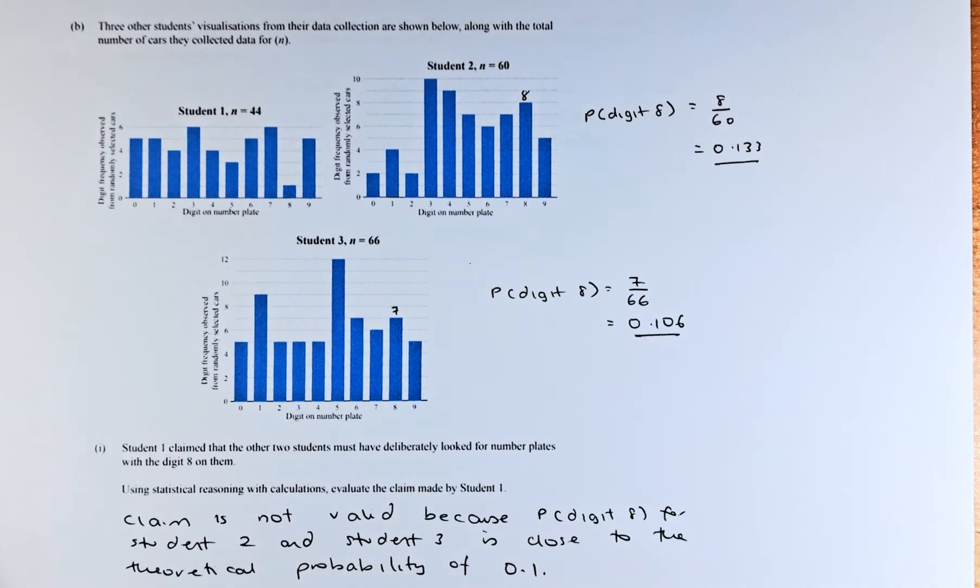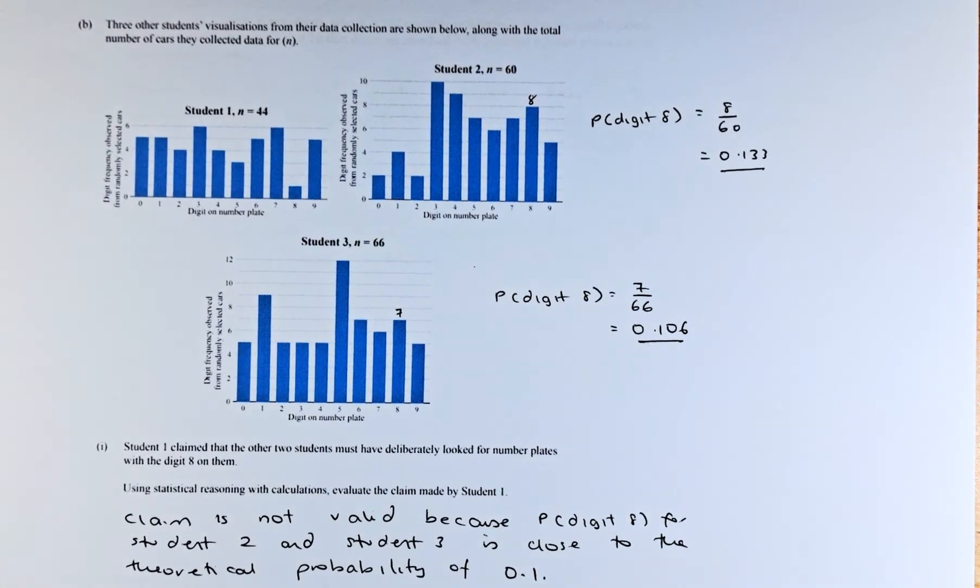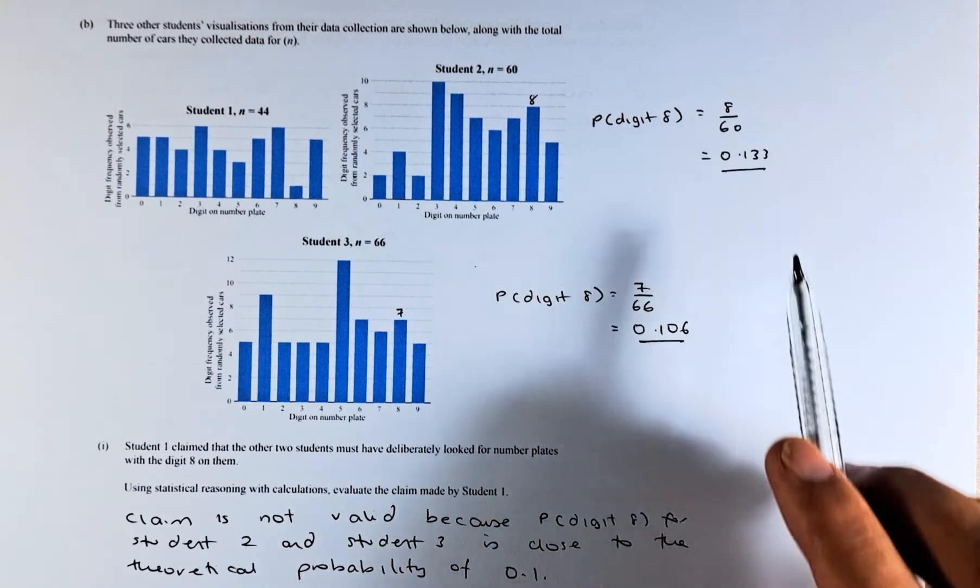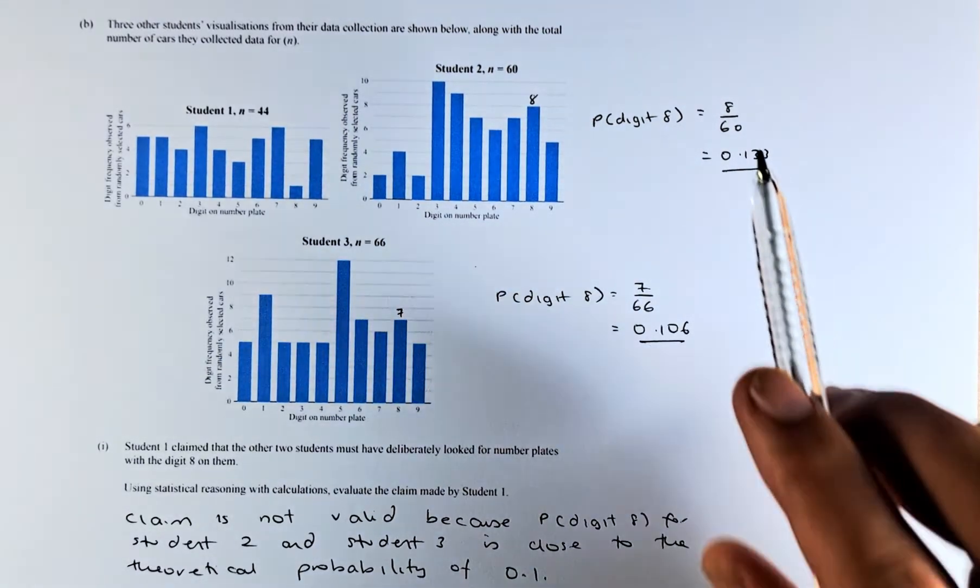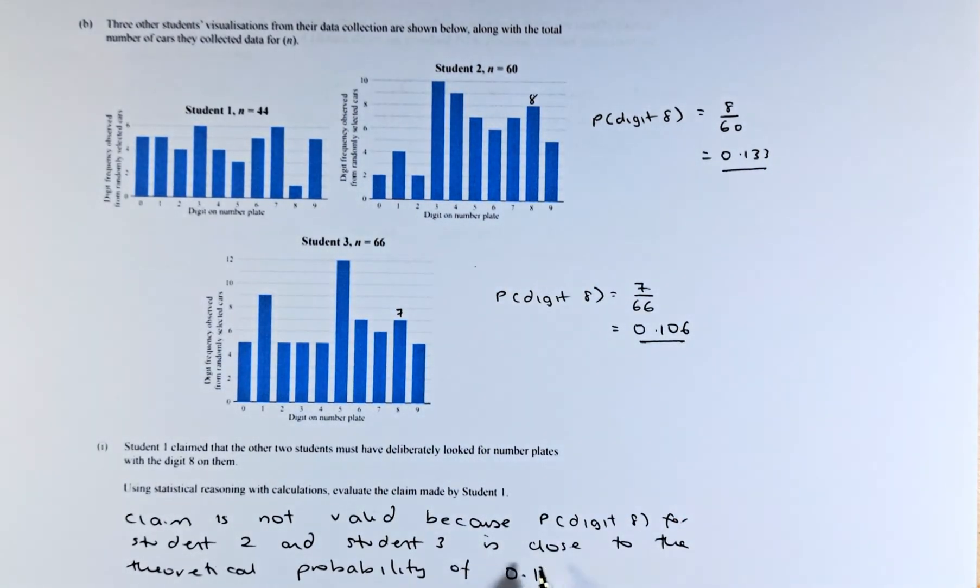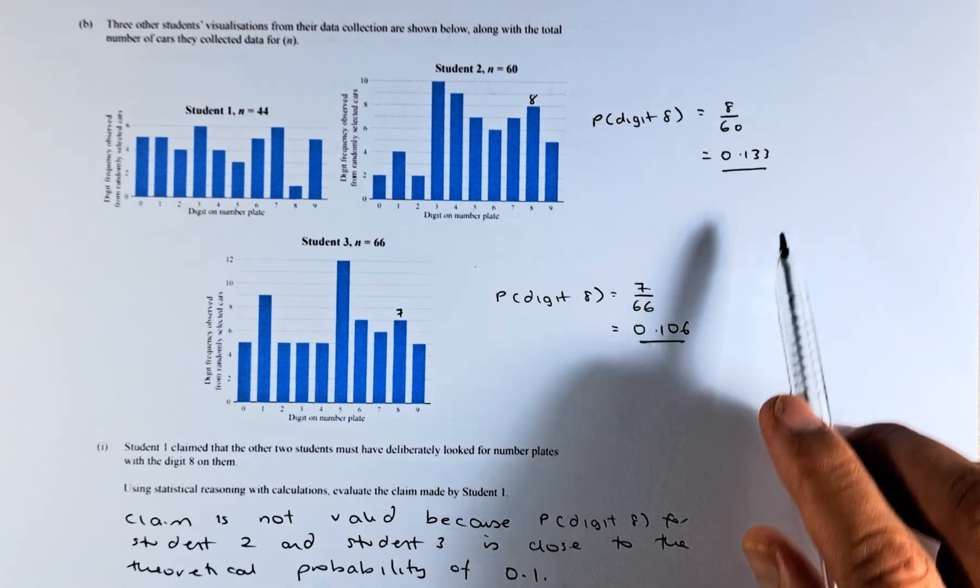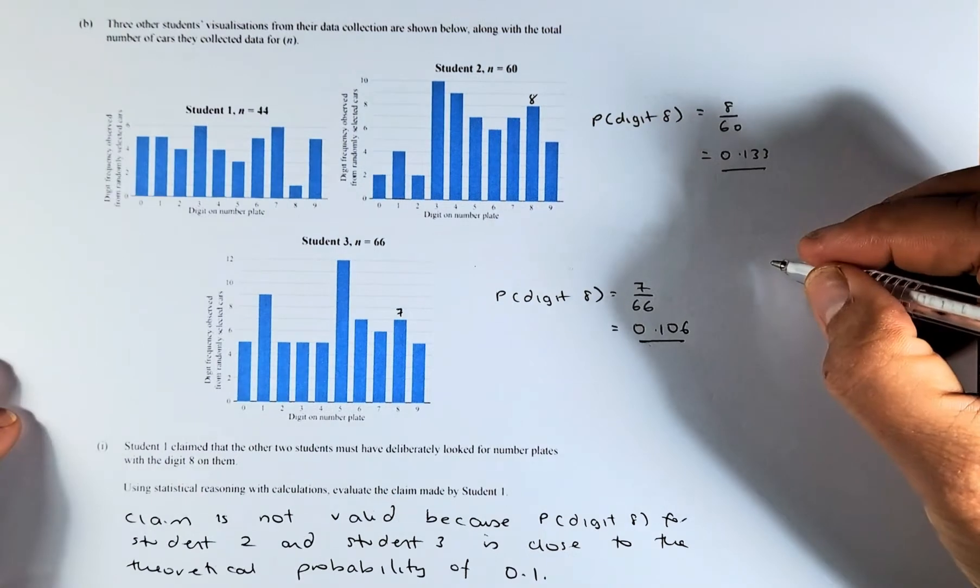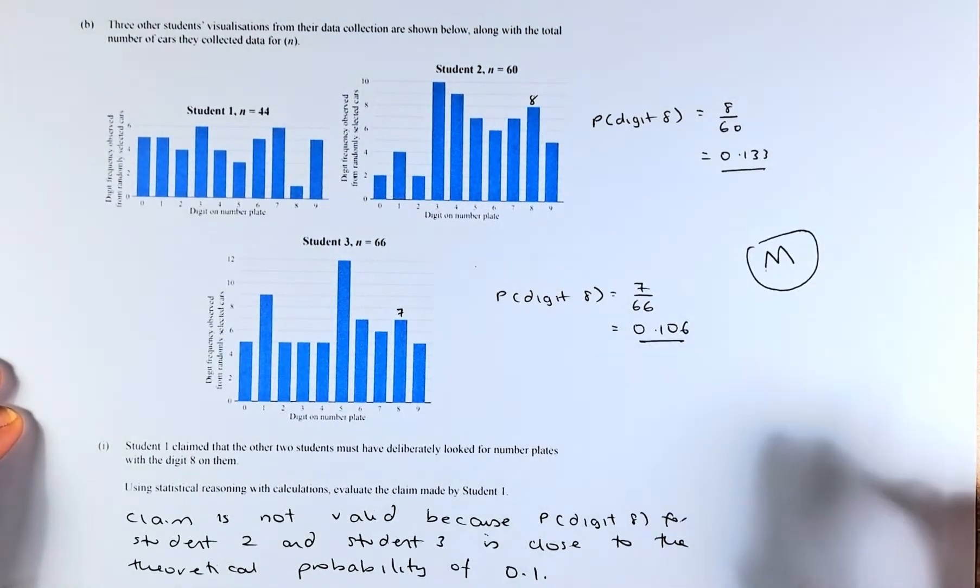If you remember the question, the first question 3A, the theoretical probability of getting any number is 0.1. So the claim is actually not valid because the probability of getting an 8 for both Student 2 and Student 3 is close to the theoretical probability of 0.1. So the claim made by Student 1 is not correct. If you can answer that, that will be a merit in this paper.